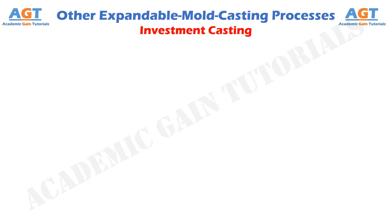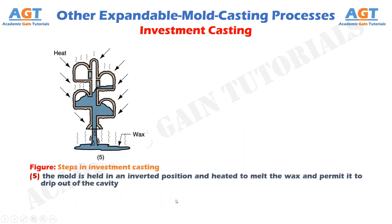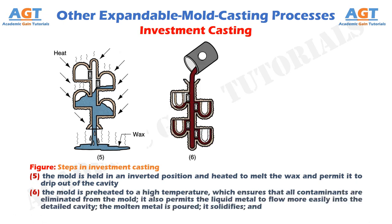Figure 5 shows the fifth step in the investment casting process, where the mold is held in an inverted position and heated to melt the wax and permit it to drip out of the cavity. Figure 6 shows the sixth step, where the mold is preheated to a high temperature, which ensures that all contaminants are eliminated from the mold. It also permits the liquid metal to flow more easily into the detailed cavity.